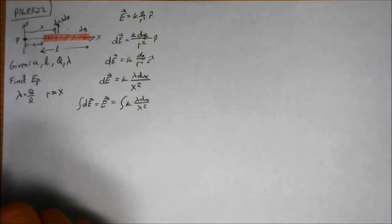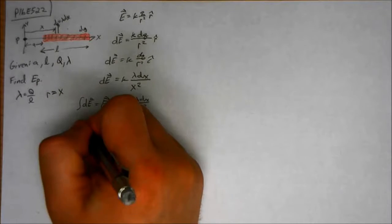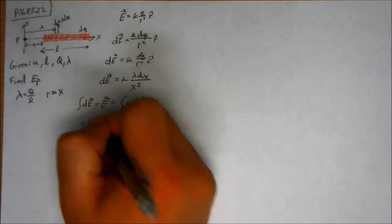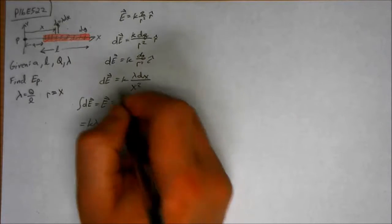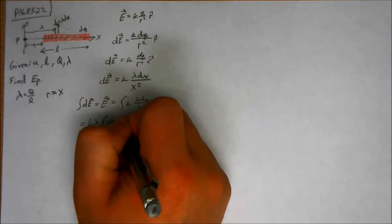Now, whenever I take integrals, I like to move everything constant to the other side. So that equals K lambda integral 1 over x squared dx.